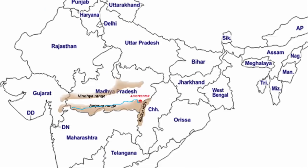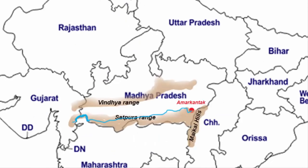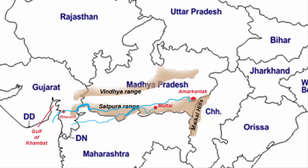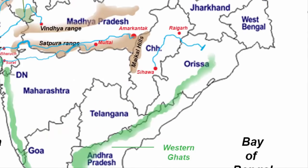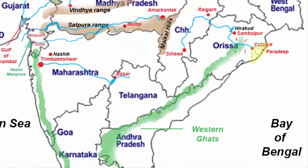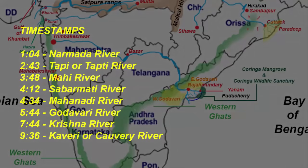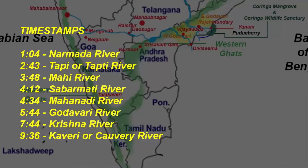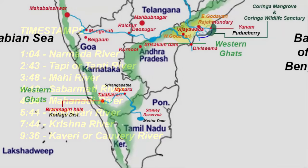In this video, we are going to learn about the major peninsula rivers of India. I am going to show you the exact place of their origin to the place where they drain and also in between a few important places where the rivers pass by. I have made the timestamps available in the description, so feel free to skip over and save some time if you feel like it.